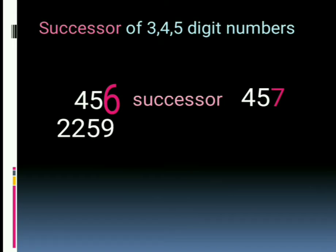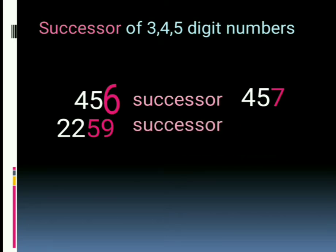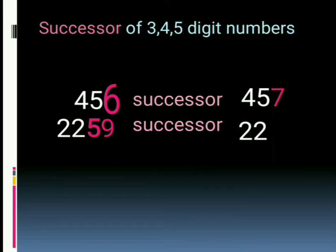In the number two thousand, two hundred fifty-nine, the ones place is nine. We have to observe the ones and tens place. That means fifty-nine after is sixty. So, two thousand, two hundred fifty-nine's successor is two thousand, two hundred sixty.